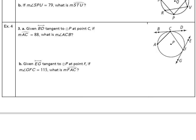On page 2 of the 10.4 notes, we're going to go all the way down to example 4. Given BD is tangent to circle P at point C, if the measure of arc AC is 88 degrees, what is the measure of angle ACB? So let's take a look at the picture — BD is tangent. The measure of arc AC is 88 degrees, so from A to C on the circle itself, that arc is 88 degrees.